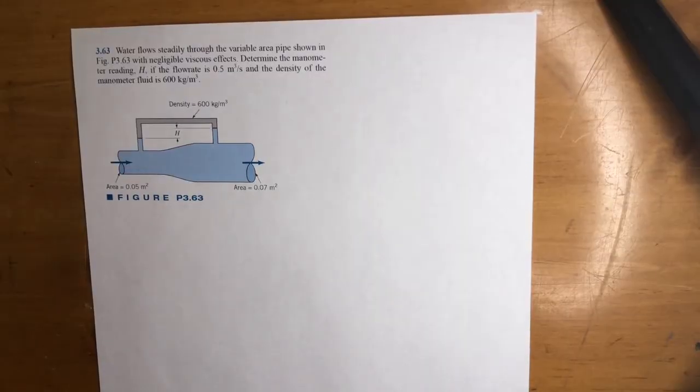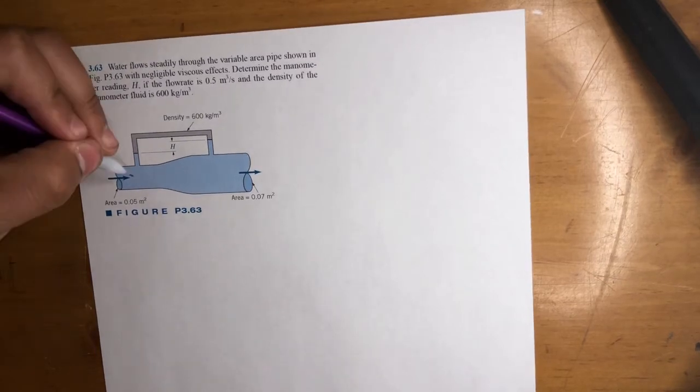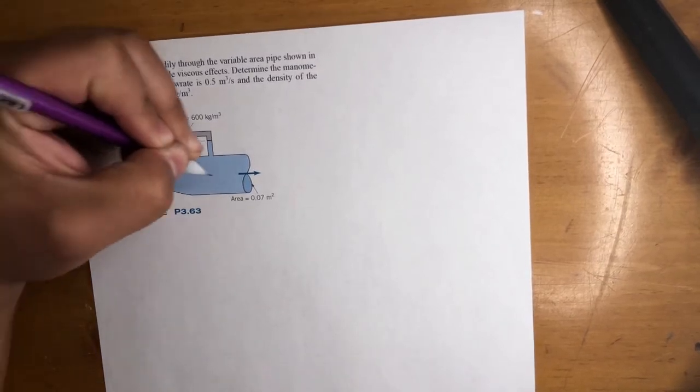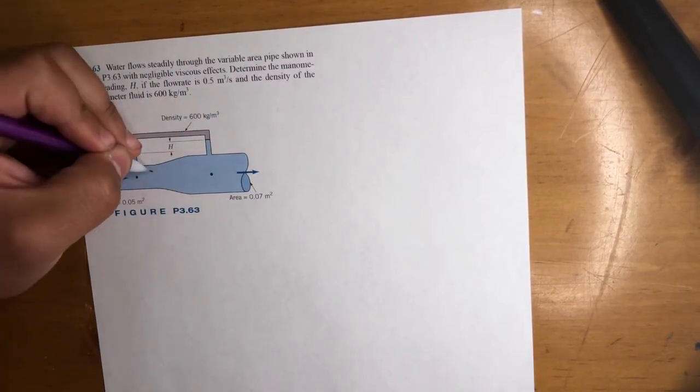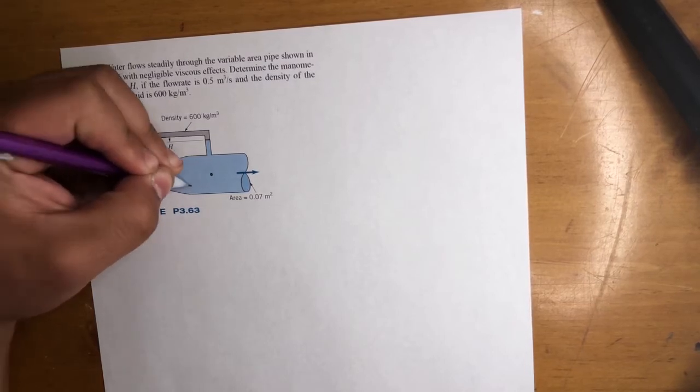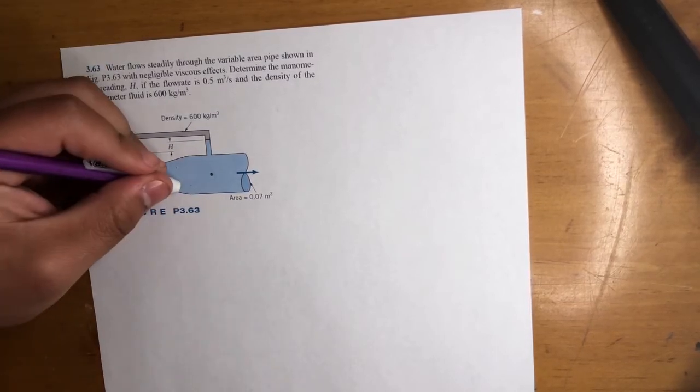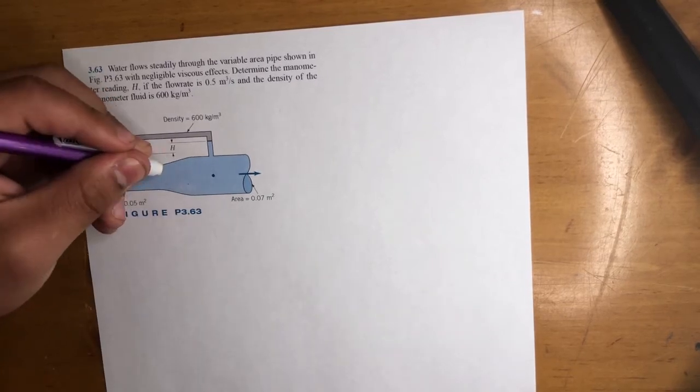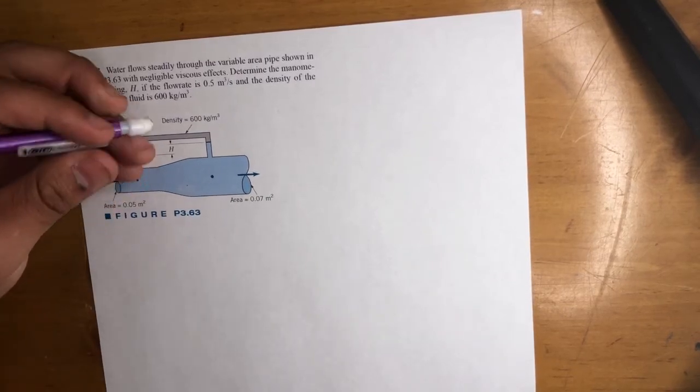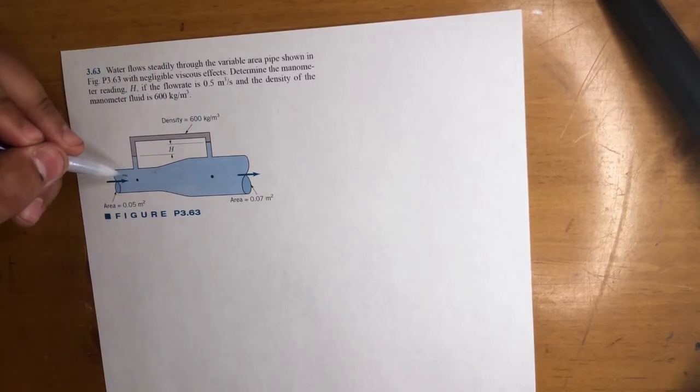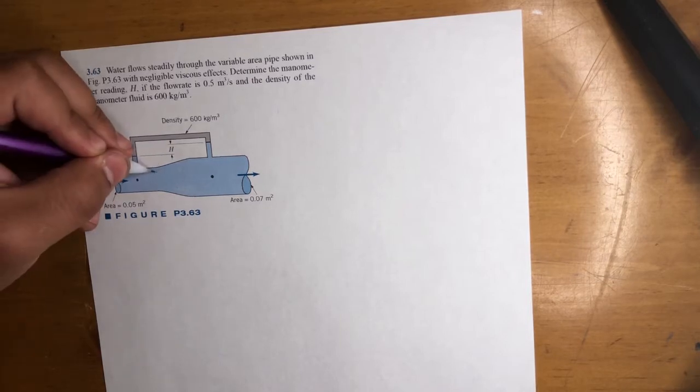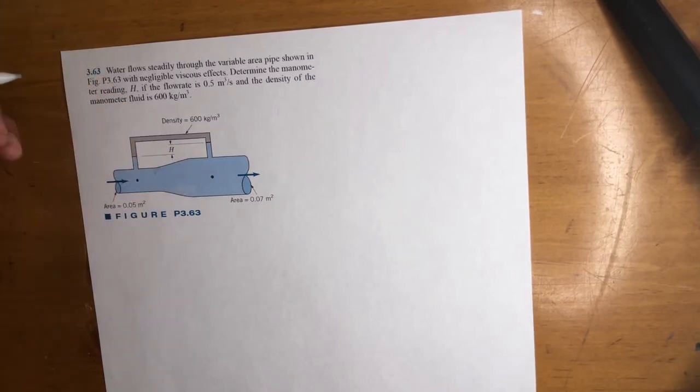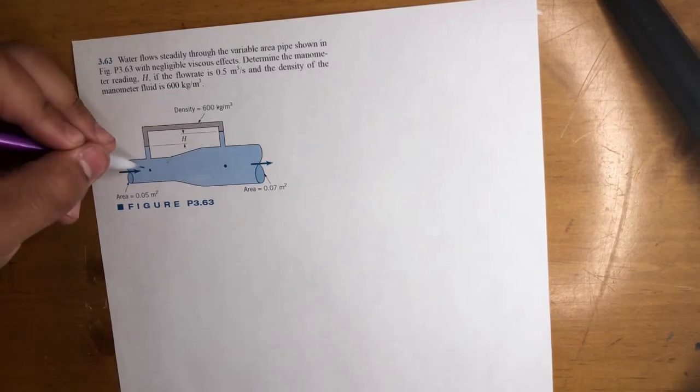Alright, so let me show you real quick how we'll approach this problem. We're going to do Bernoulli's from this point to this point. Now, the reason I chose these two points - you really could choose it here, here, here, anywhere, right? But the thing is, it's not easy getting pressure values and heights at those locations. So technically, yes, we could do it from here to some point here, but then we got to find heights from this point to this point, and it kind of makes no sense.